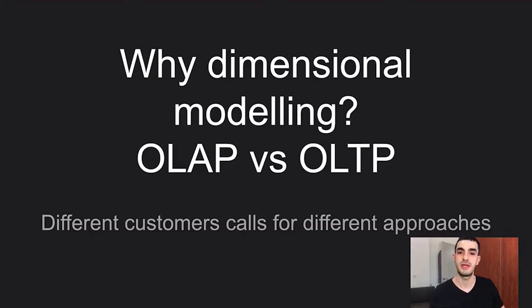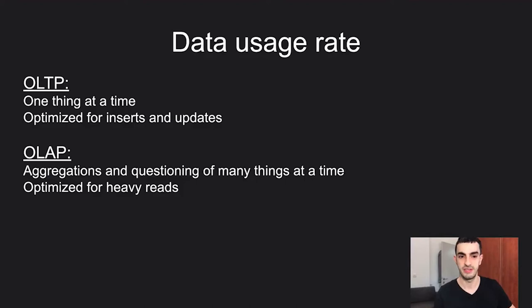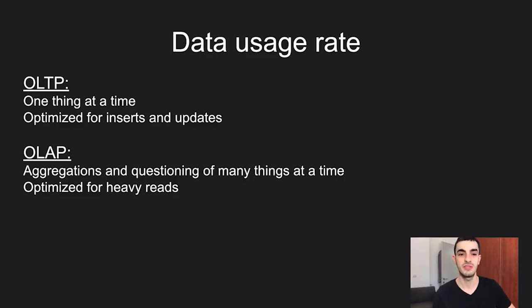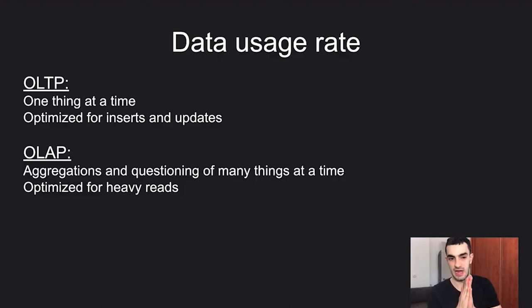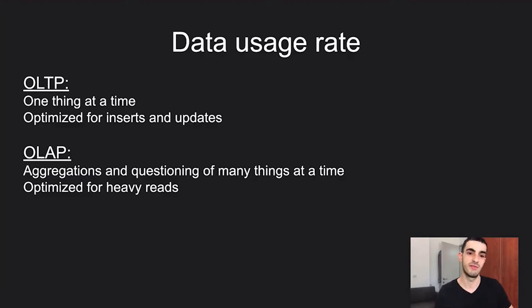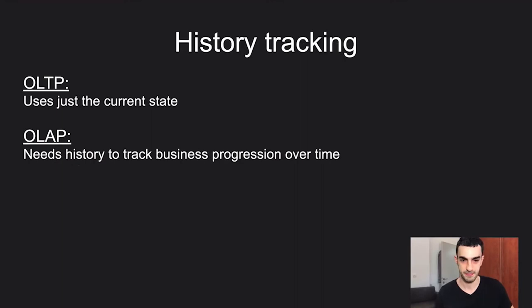Let's talk about why dimensional modeling is needed — specifically the differences between OLAP and OLTP. First, data usage rates: in OLTP you usually read one thing at a time, optimized for inserts and updates. When an account signs in you read data for that specific account. In OLAP we want to do aggregations over many things at a time — we don't read just one account, we read all accounts and aggregate something about them. So we need to optimize for heavy reads rather than single-record reads and inserts.